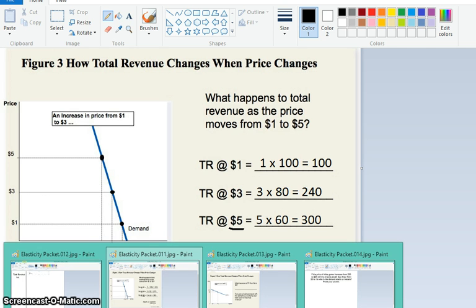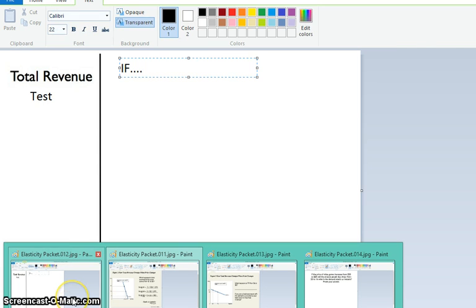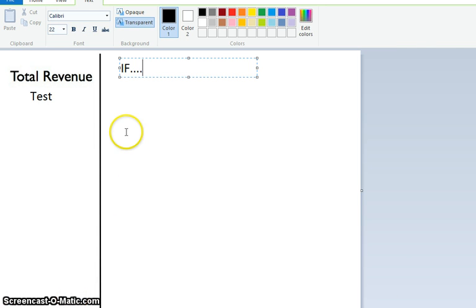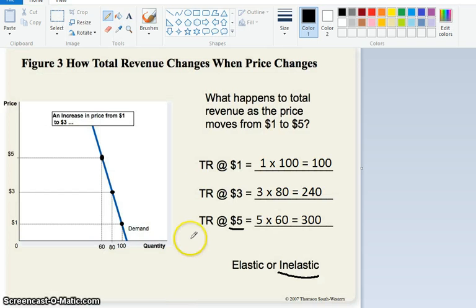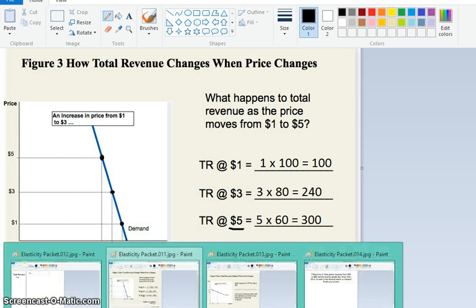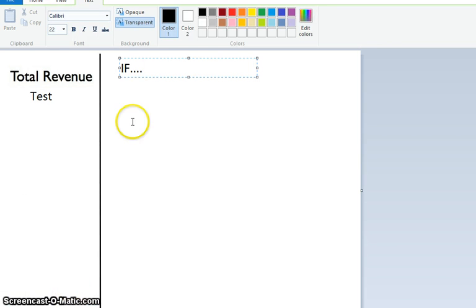Now, if you look at the next slide, you have the total revenue test here. This is a test. Notice on this slide, I changed the price—we increased the price from $1 to $5. So your total revenue test is,